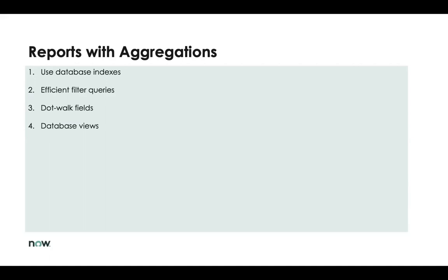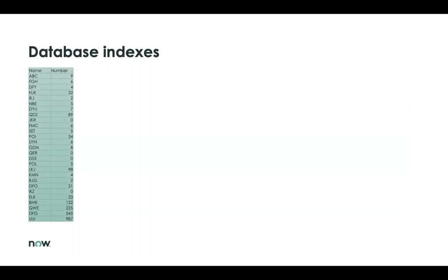Database indexes — what are they? Here we have just a list of names and a list of numbers. If someone is searching for a specific value, in order to find it you'd have to go one by one to evaluate if what you're looking for is there. This makes it really, really slow to find data. And this is what database indexes actually do.